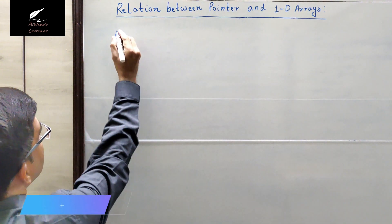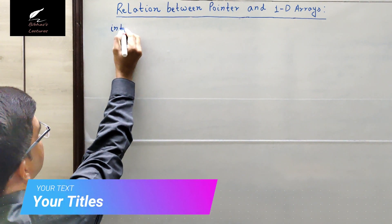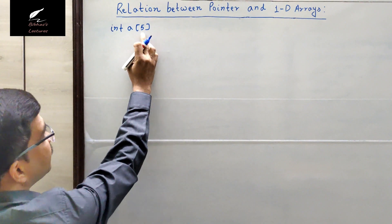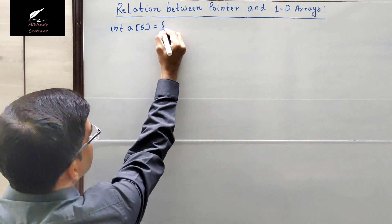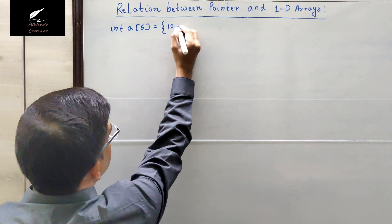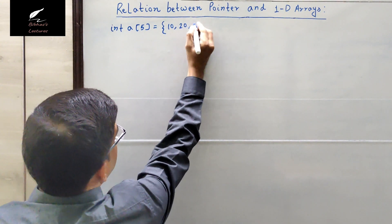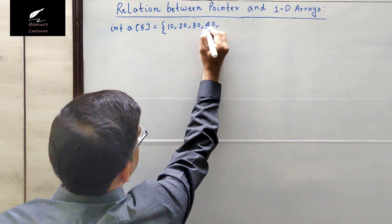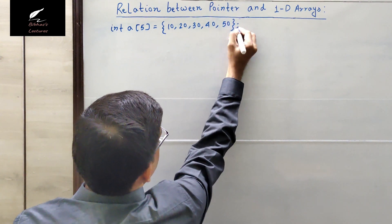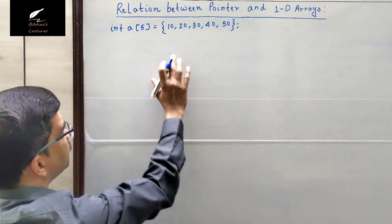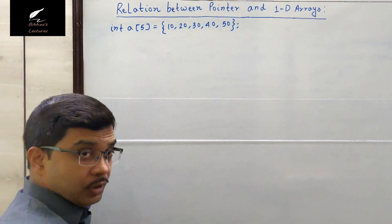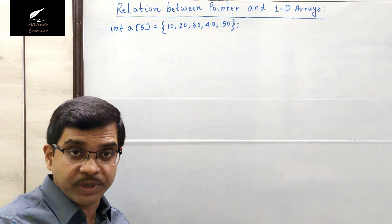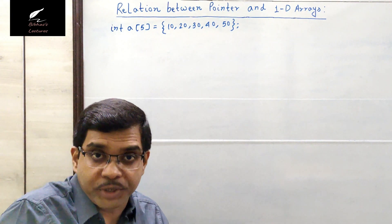I am declaring an integer array 'a' having size 5, and assigning five different integer values: 10, 20, 30, 40, and 50. After executing this statement, the C compiler will allocate memory in the RAM.